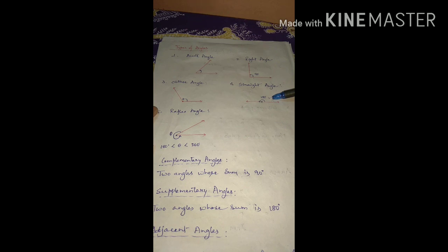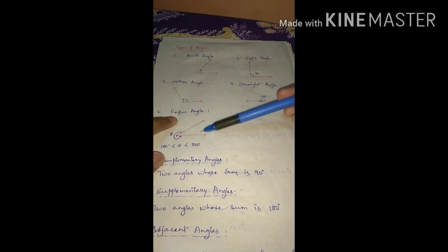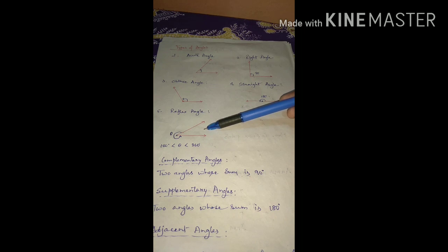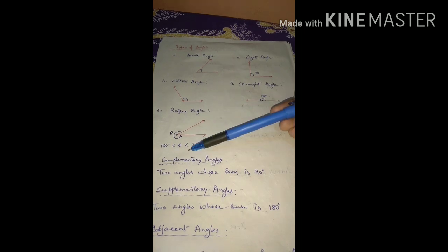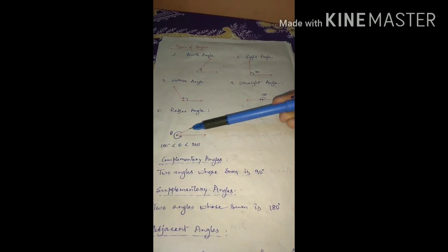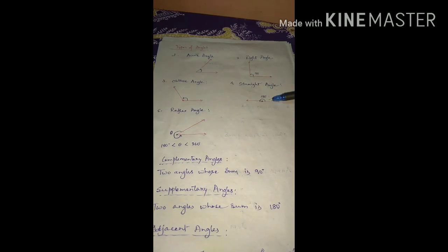Next is reflex angle. A reflex angle is an angle that is more than 180 degrees but less than 360 degrees. More than 180 and less than 360 — that is known as a reflex angle. The angle which is exactly 180 degrees is the straight angle, and the other three types you already know.